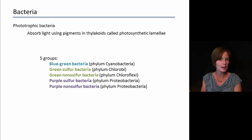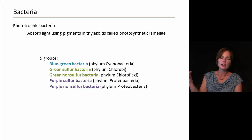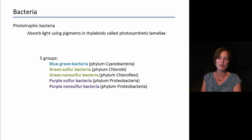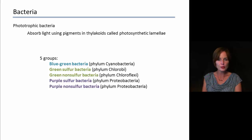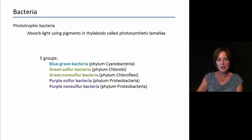Another bacterial subdivision is the phototrophic bacteria. These get their energy from light, absorbing it using pigments in thylakoids called photosynthetic lamellae. These are different from the thylakoids in chloroplasts, because bacteria are prokaryotic cells and don't have membrane-bound organelles like chloroplasts. There are five different groups of phototrophic bacteria: blue-green bacteria, green sulfur bacteria, green non-sulfur bacteria, purple sulfur, and purple non-sulfur.